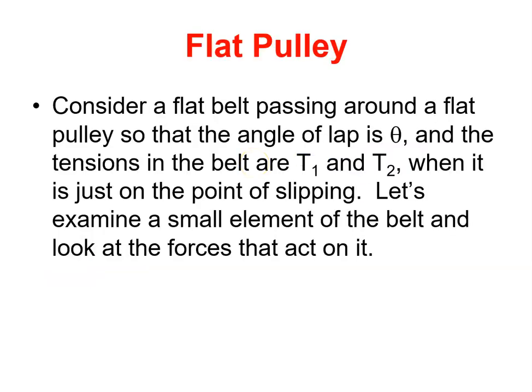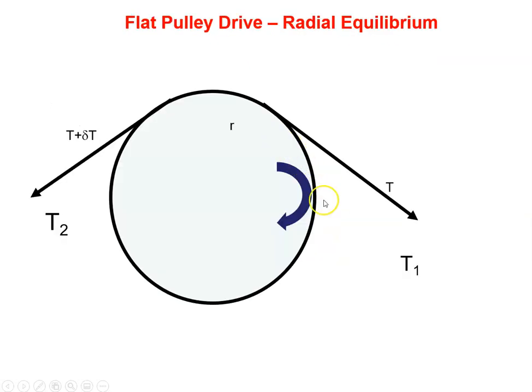Okay, so the first thing I'm going to do is we just have to consider a flat belt going around a pulley at a particular angle, and the tensions are T1, T2, and the tension is just at the point where the belt is about to slip. So, here's the pulley, here's the belt.